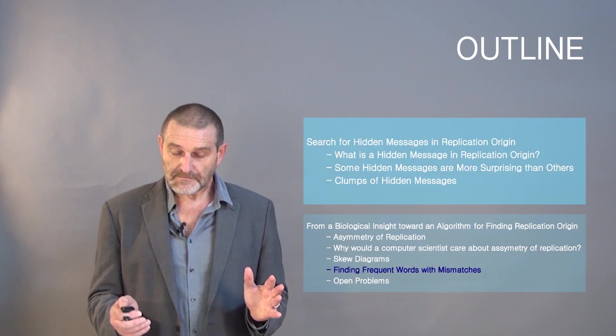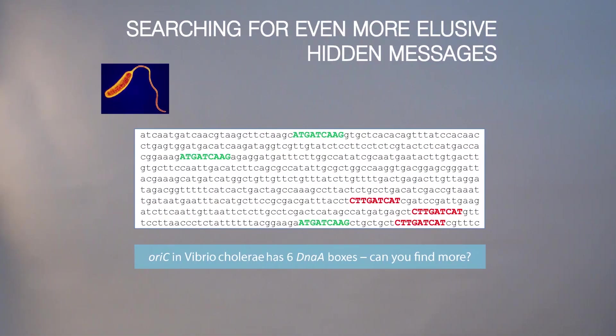When we were looking for frequent words, our view of frequent words was very naive. We assumed that frequent words are simply k-mers. But maybe the hidden messages that the cell uses to initiate replication are more elusive, more subtle. Let's look at the origin of replication in Vibrio cholerae and try to see if maybe there is something else. We already found six DnaA-mers in this region, but maybe there is something else that deserves our attention.